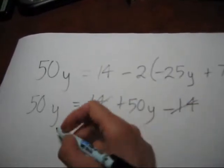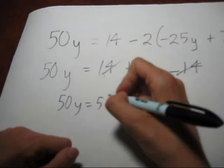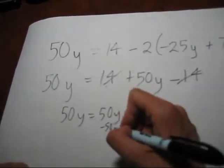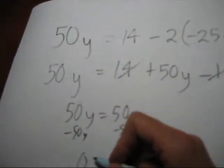Well, how about we subtract 50y from both sides? Then we get 0 equals 0.